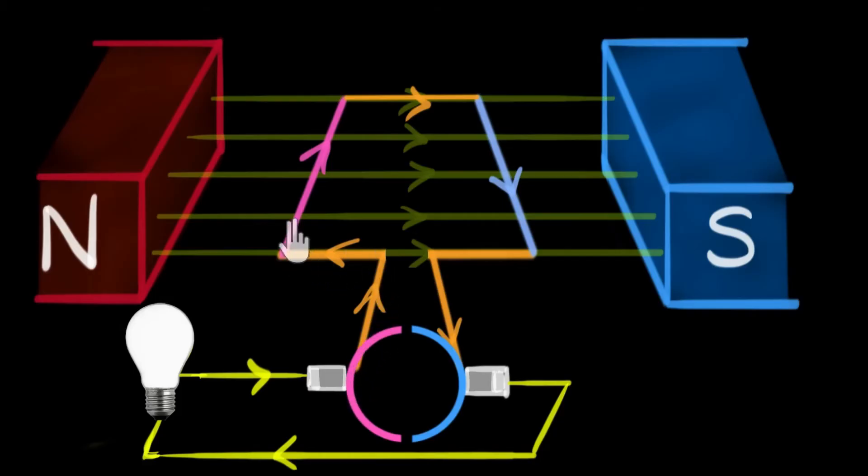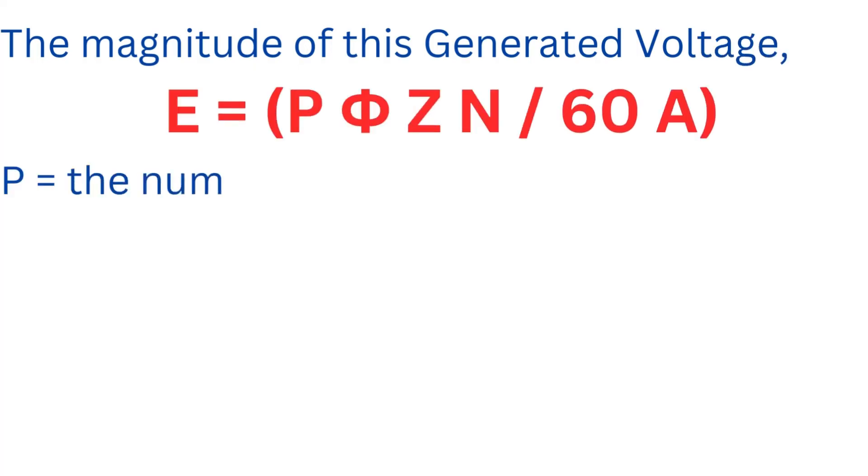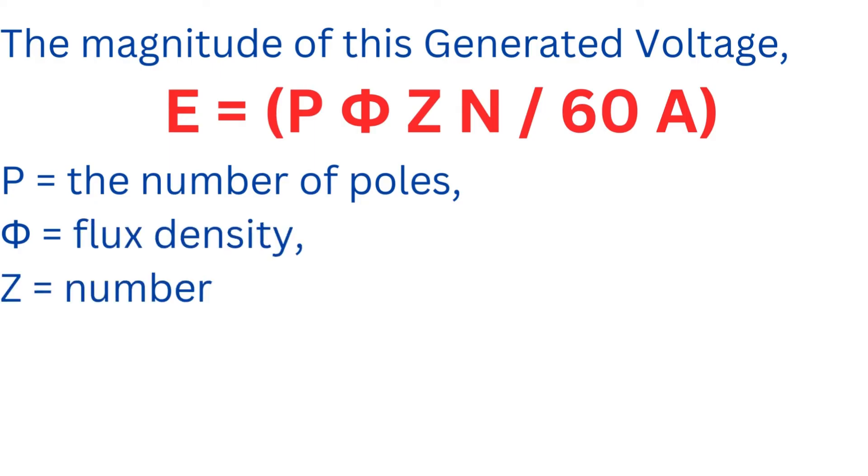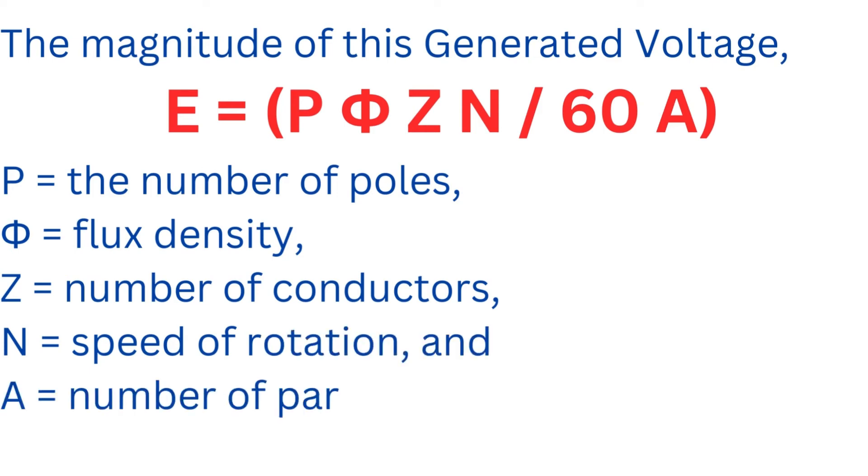The magnitude of this generated voltage can be mathematically expressed as E equals P phi Z N by 60 A, where P represents the number of poles, phi is the flux density, Z stands for the number of conductors, N is the speed of rotation, and A denotes the number of parallel paths in the armature winding.